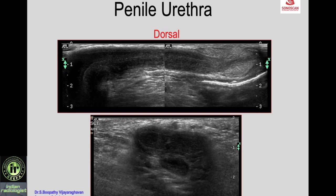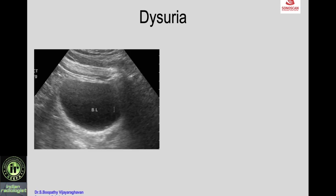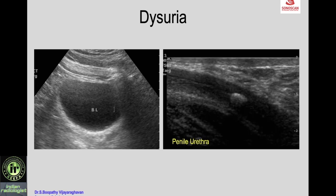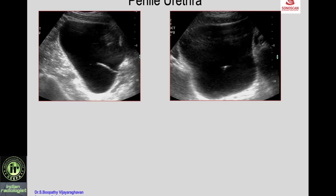The penile urethra can also be seen by high-frequency scan. On scanning the penis from the dorsal aspect you see the corpus spongiosum — the urethra lies within it. The axial scan shows the two corpora cavernosa and the single corpus spongiosum on the ventral aspect. In a patient with dysuria where the bladder and urinary tract were normal, scanning the penis from the ventral aspect reveals the corpus spongiosum with the urethra and a calculus impacted there — the cause of dysuria.